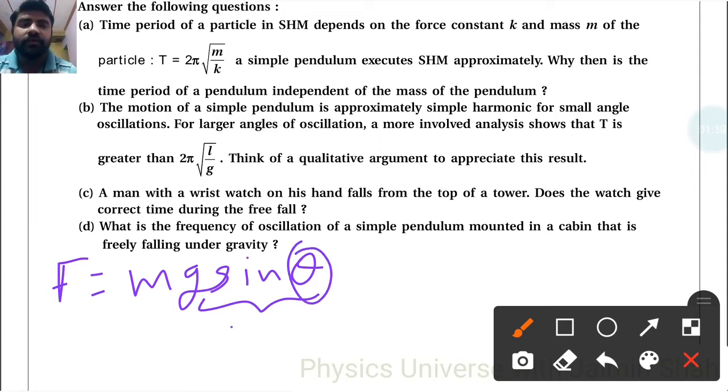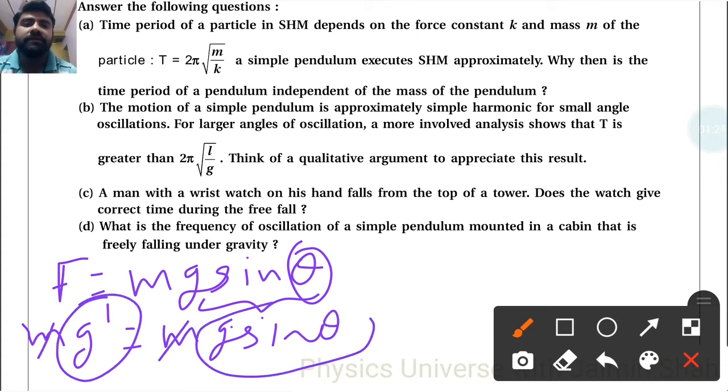We get mg' equals mg sin θ, so m gets cancelled out. Now g' is completely depending on g sin θ. So if this g' is larger, that means g' is more than g. Our new time period T' is equal to 2π√(l/g').